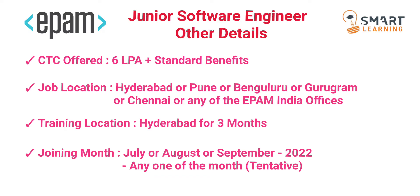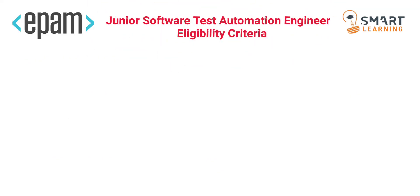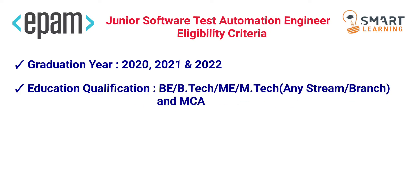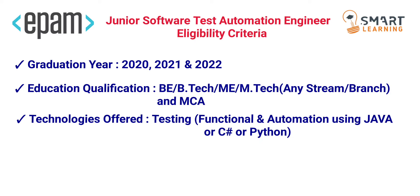Now coming to the Junior Software Test Automation Engineer role. The eligibility is as follows: graduation year must be 2020, 2021, or 2022. Education qualification can be BE, BTech, ME, or MTech from any stream or branch, and MCA is also eligible for this test automation engineer role. The technologies offered include testing — both functional and automation — using Java, C#, or Python. Minimum 60% is necessary to apply for this role.